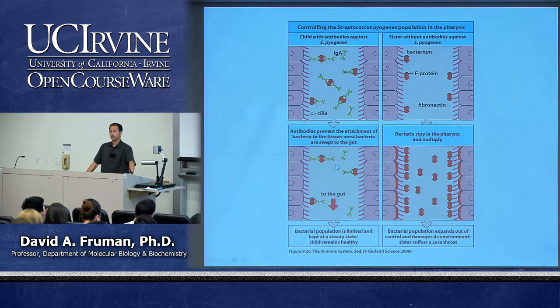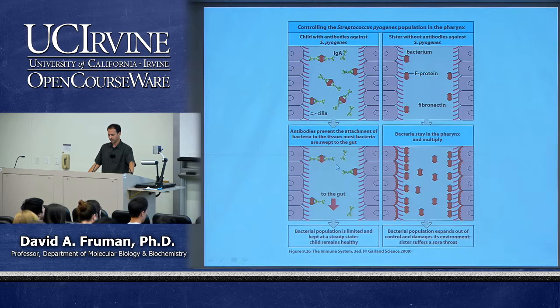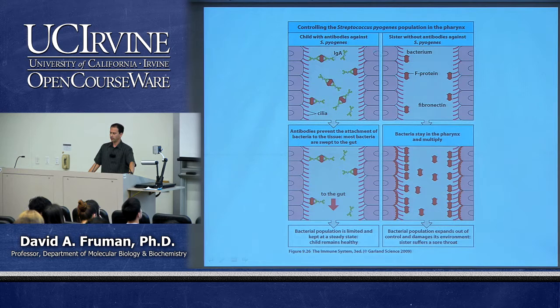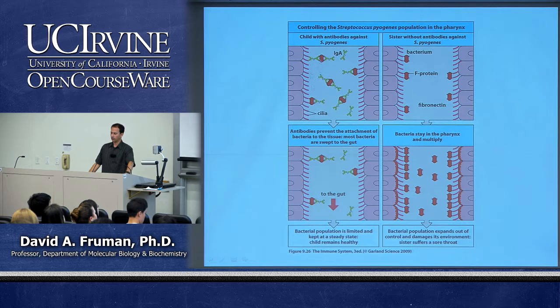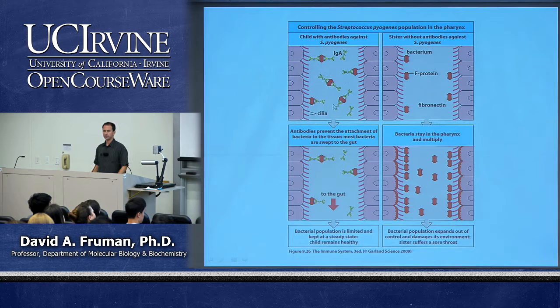The second example is for bacteria. Some bacteria need to attach to cells or extracellular matrix in order to reproduce — examples are the gonorrhea bacteria and strep bacteria in the throat. One child with pre-existing antibodies to Streptococcus pyogenes is protected, while his sister without those antibodies allows the bacteria to attach to extracellular matrix proteins like fibronectin, multiply in the throat, and cause a sore throat. Neutralizing IgA antibodies prevent attachment of the strep bacteria to the extracellular matrix, and then the cilia sweep all of the bacteria into the gut where they are destroyed.